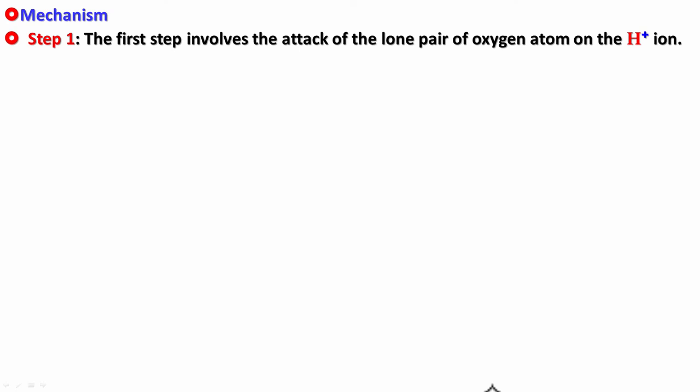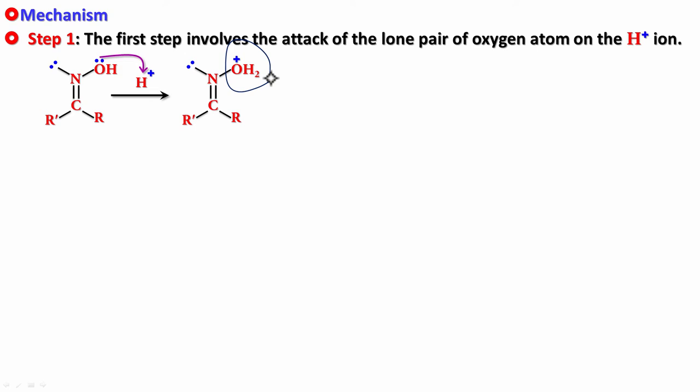Let's see the mechanism, step one. In the first step, since you have an H+ and you have an OH in the oxime, the lone pair of oxygen will attack the H+. So the oxime gets protonated. The second step is the most important — it's the key step and the rate-determining step. In the second step, water, this particular group, will leave the nitrogen, making the nitrogen electron deficient.